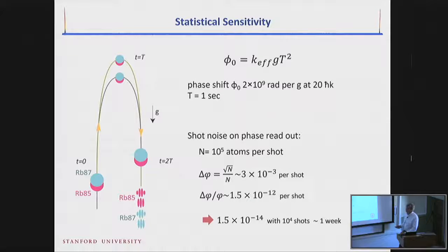If I have 10 to the 5 atoms per shot, which is where we're working right now, and you achieve shot noise resolution on the readout, which we're close to, then you can resolve phases on the order of 3 milliradians per shot. Each shot takes us about 20 seconds. That means your sensitivity is on the order of 10 to the minus 12, that should be delta G over G, 10 to the minus 12 per shot. If you have 10 to the 4 shots, or about a week of data collection, that puts you in the low 14s for your EP statistical sensitivity alone. Comparing that to the current state of the art on the order of 10 to the minus 13, and the objectives for microscope in the 14s, this seems to be a legitimate science goal.